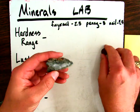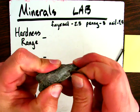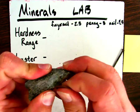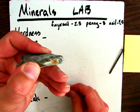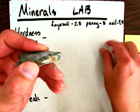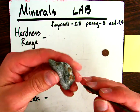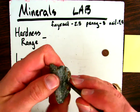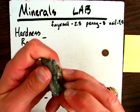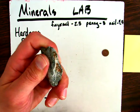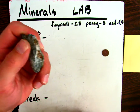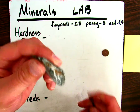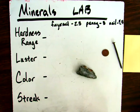Let's try to test with our penny. Our penny definitely scratches the sample. And for reference, let's go ahead and scratch with our nail. You can see that our nail also scratches the sample. So go ahead and make your analysis of the hardness range based on that information.